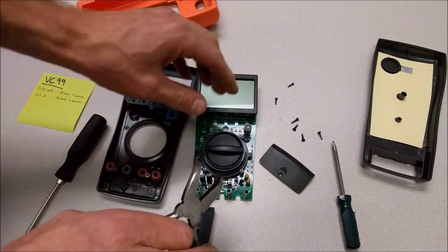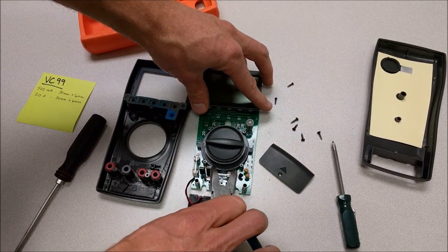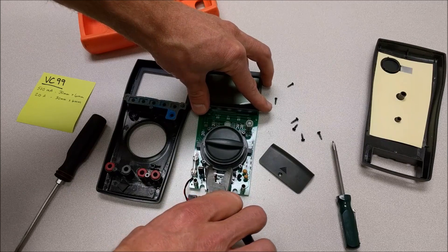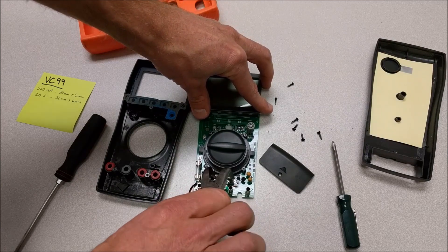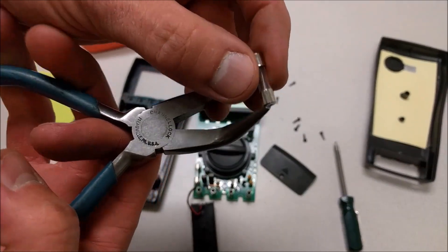So to change these fuses, carefully, I like to grab them by the ends because they are glass fuses. I don't want to break the glass. We pull them out like this.